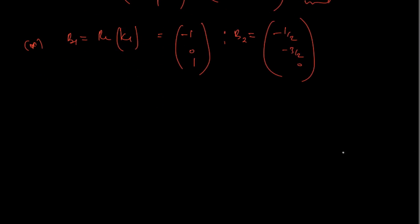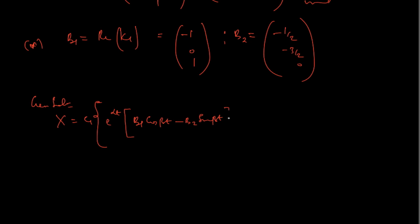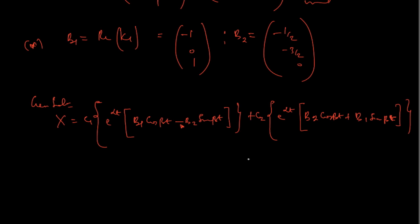Having gotten b1 and b2, recall that the general solution is x equals c1·e^(αt)·[b1·cos(βt) minus b2·sin(βt)] plus c2·e^(αt)·[b2·cos(βt) plus b1·sin(βt)]. So let's now write our final solution.